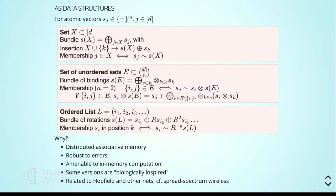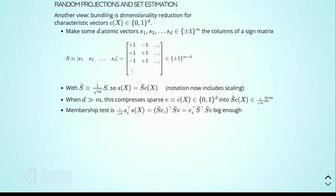A way to look at this — which you were probably already guessing — is: take these d atomic vectors, the m-dimensional atomic vectors, and arrange them as columns of a matrix. They're sign vectors, so you have a sign matrix. If you multiply that matrix, suitably scaled, by the characteristic vector of a given set, you're just picking out the appropriate columns and adding them up. The VSA representation of a set is just the sketch of its characteristic vector. VSA is just sketching in very light disguise.